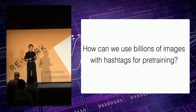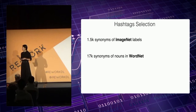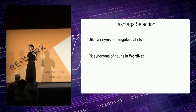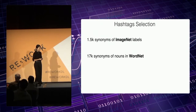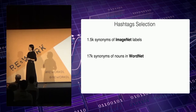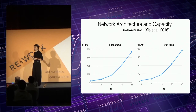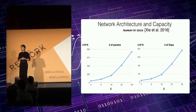The question is: how can we leverage billions of images with hashtags for pre-training? To create a dataset, we first constructed two label spaces. The first is equivalent to ImageNet labels, where we retrieve all hashtags equivalent to those 1,000 ImageNet categories. We also created another label set containing 17,000 hashtags with larger visual variety — synonyms of nouns in WordNet. Once we had those hashtags, we retrieved all the public Instagram images for use as training data. For training, we use the standard architecture ResNetX with varying capacity, and the largest model we trained contains almost 900 million parameters.